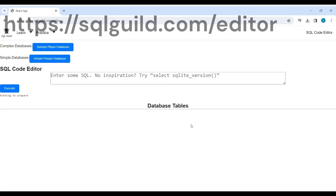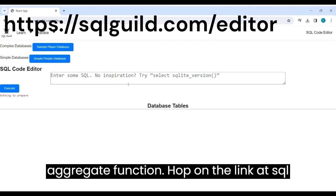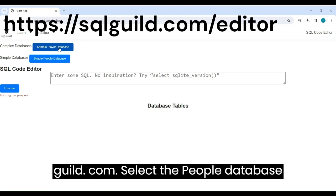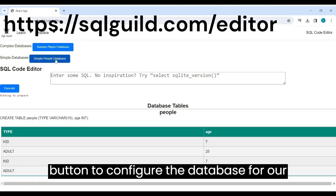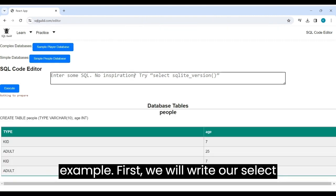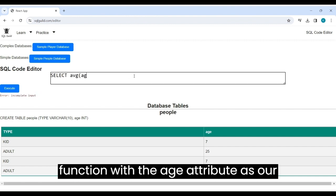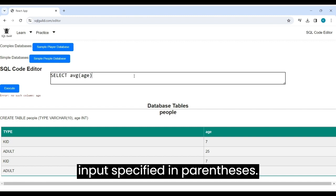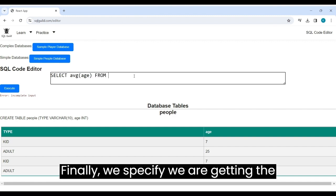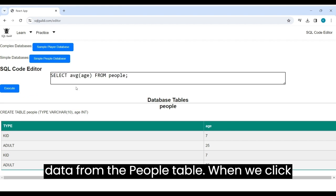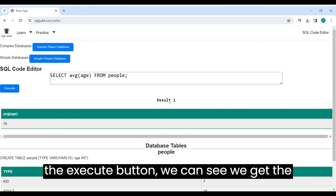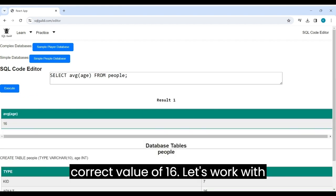Okay, we are ready to code up our first aggregate function. Hop on the link at SQLGuild.com. Select the People Database button to configure the database for our example. First, we will write our select clause using the Average aggregate function with the age attribute as our input, specified in parentheses. Finally, we specify we are getting the data from the people table. When we click the Execute button, we can see we get the correct value of 16.